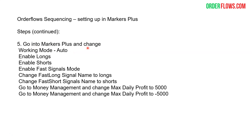Go into Markers Plus and change the working mode to auto, enable longs, enable shorts, and enable fast signal modes because we're going to use fast signals. You can change the name of the fast signals: longs for buys and shorts for sells. You can change it to whatever you like — longs and shorts, or buys and sells, it's up to you.